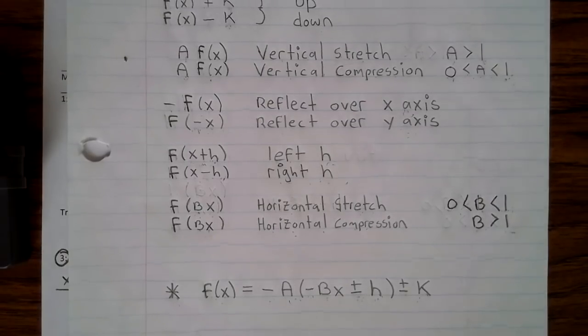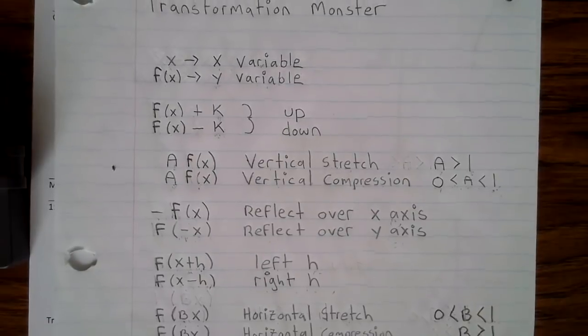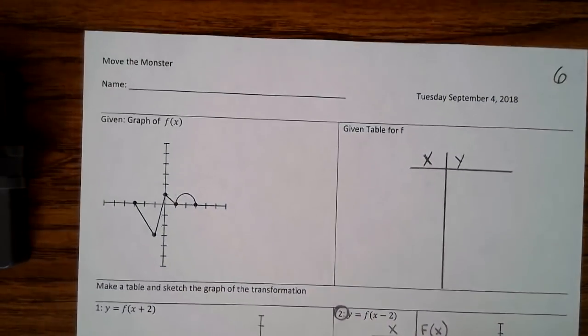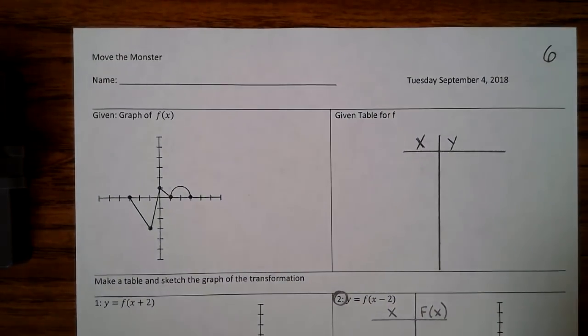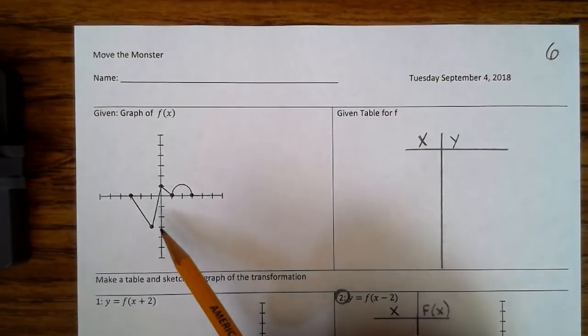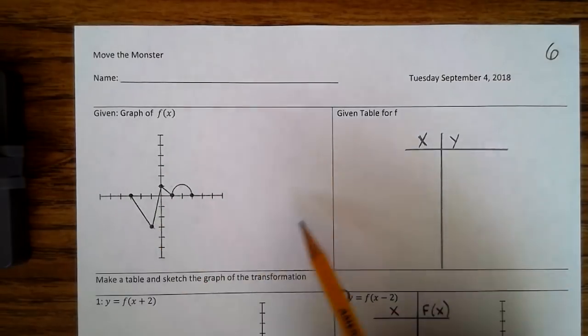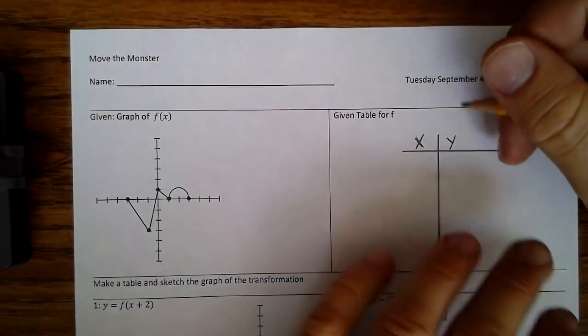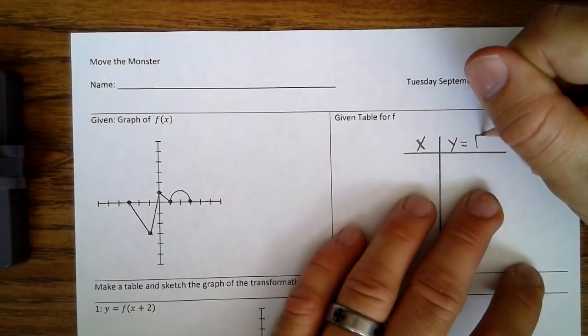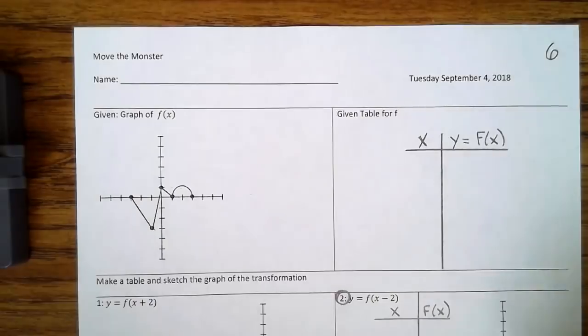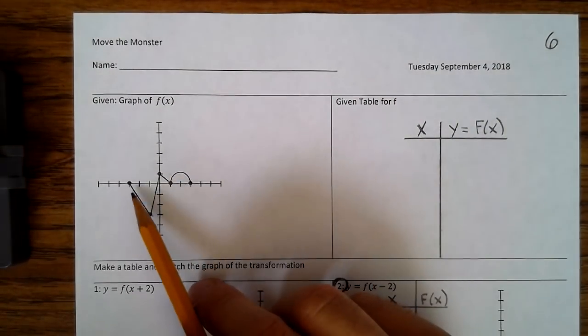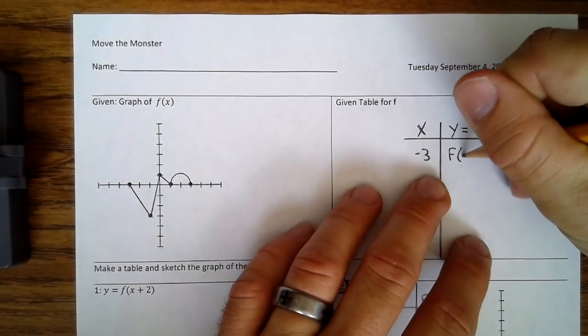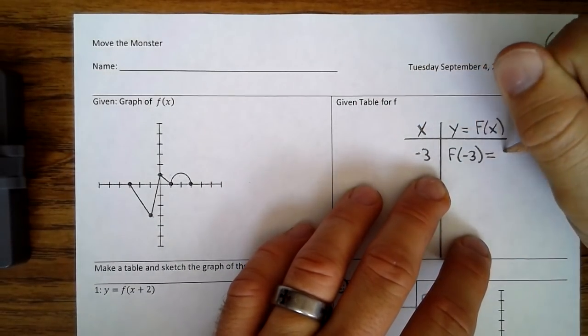Alright. Now your notes are updated. Let me just scan back there just in case you missed something. Let's move on to the Move the Monster. Now, first thing first is we need to find the original points of f(x), and we're going to make a table. I have x and y, but really you need to get in the habit of instead of y, we write it as f(x). And I'll show you why now. So here, when we had the point negative 3, 0, that's actually f(-3) = 0.